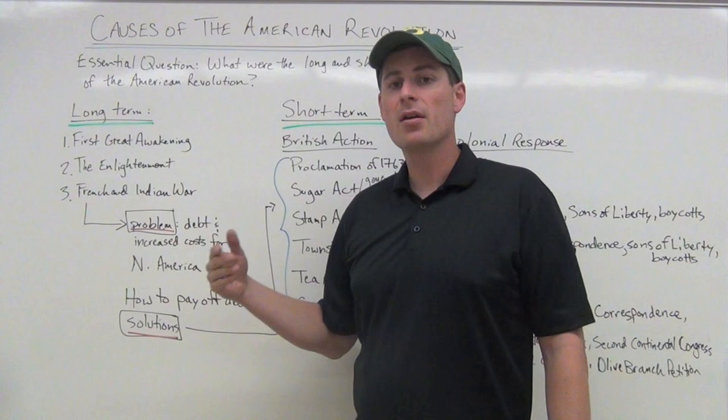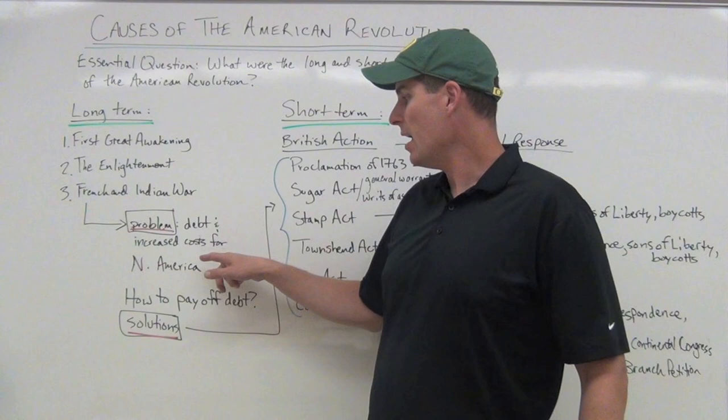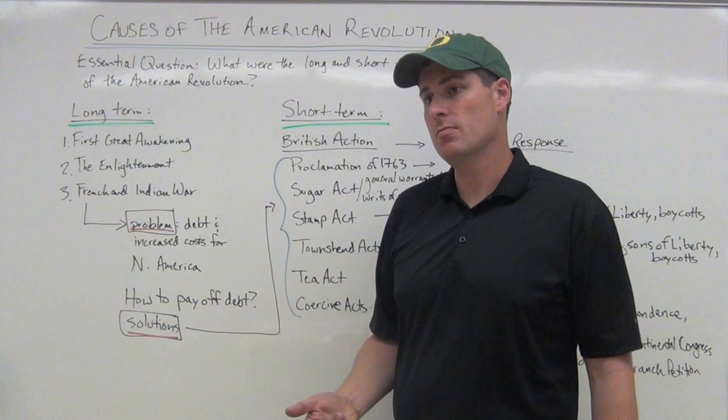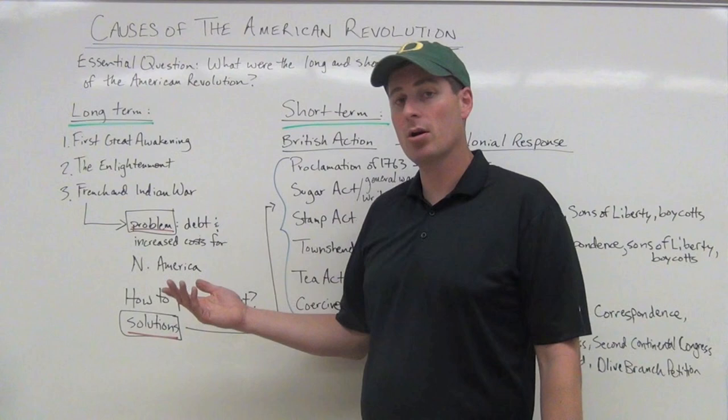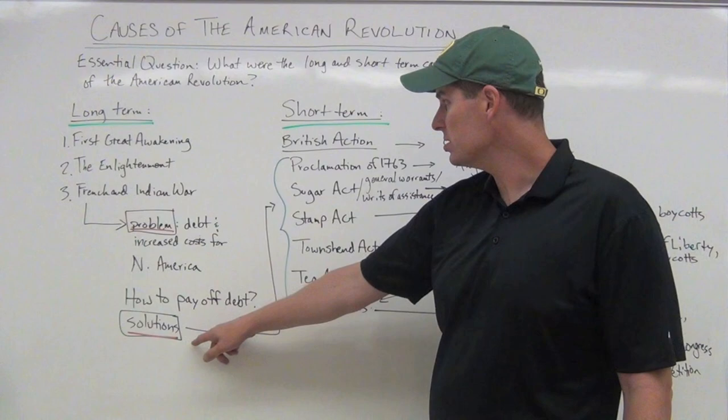Leaving the French-Indian War, the British take basically Canada and remove the French from North America. But the problems are they now have a massive amount of debt from the war, and increased costs to operate North America because they have a lot more land. They have to manage the French population in Canada, deal with Native Americans, and keep the peace with the British American colonies. So the question becomes how to pay off this debt, and the solutions become some of the short-term British actions.